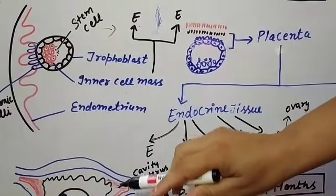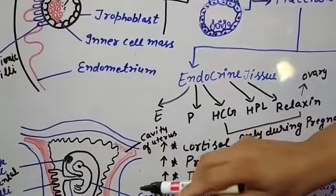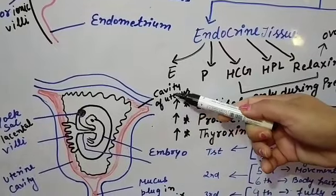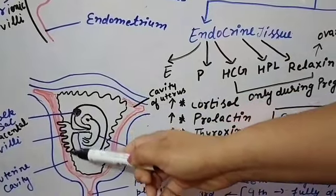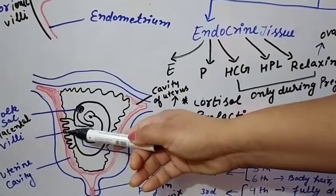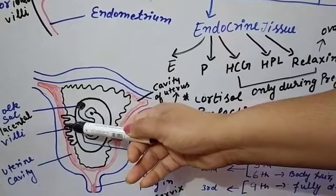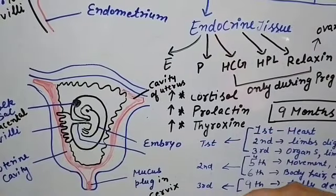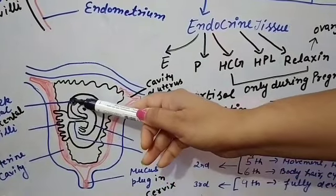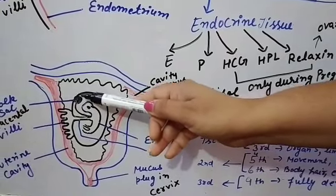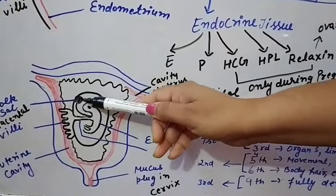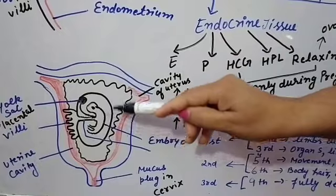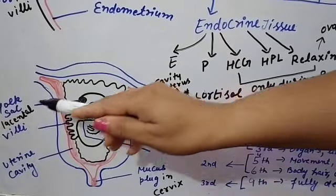Here we can see the cross-section of the uterus, showing the uterine cavity and the finger-like projections known as placental villi. The chorionic villi and the endometrium lining show interdigitation, forming the placenta. The yolk sac is also present here, and importantly, the initial formation of RBCs is done by the yolk sac of the embryo.